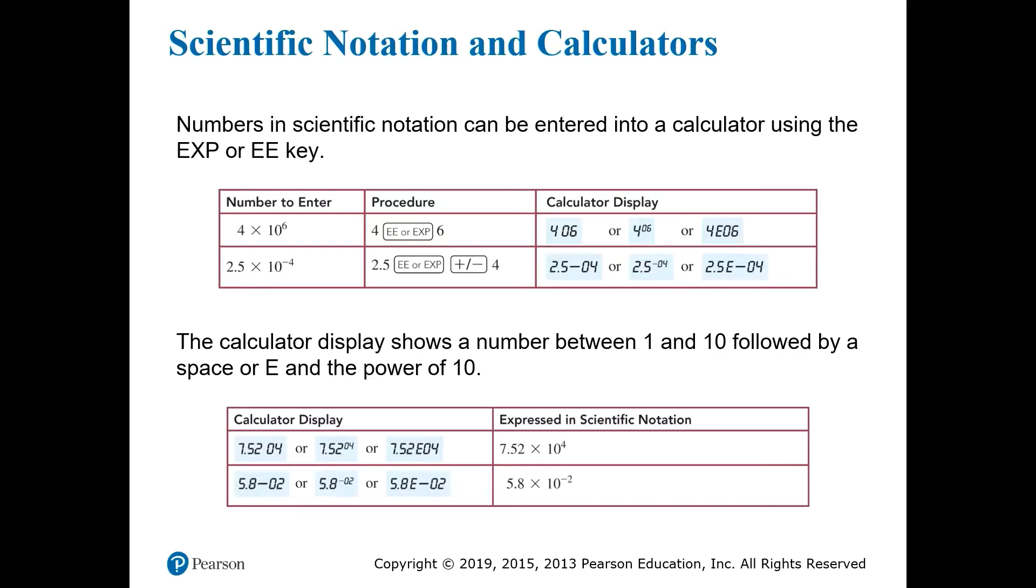Using scientific notation with a calculator can be tricky, and unfortunately there are a lot of different kinds of calculators that work in different ways. For now, we'll try to describe how some of the most common types work, but the best thing you can do is pick a calculator early and practice using it. For this course, a scientific calculator is needed, which means one that can handle logarithms, exponents, and of course, scientific notation. A simple four-function calculator that only does addition, subtraction, multiplication, and division won't be enough.